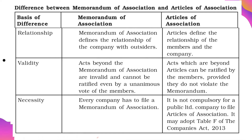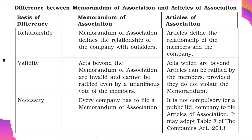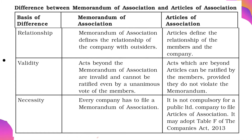From the validity point of view, acts beyond the Memorandum of Association are invalid and cannot be ratified even by a unanimous vote of the members. In the case of Articles of Association, acts which are beyond the Articles can be ratified by the members, provided they do not violate the Memorandum of Association.